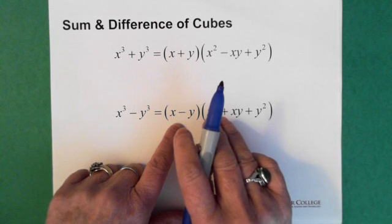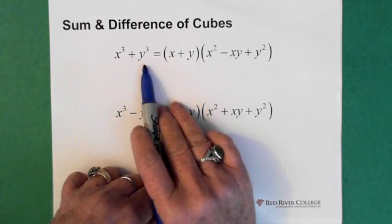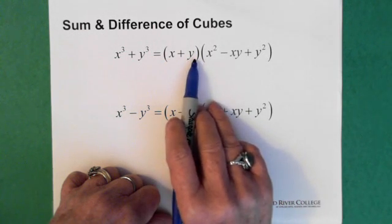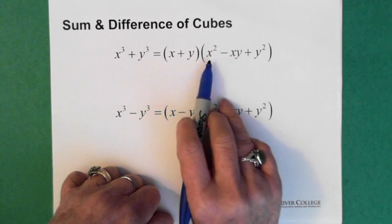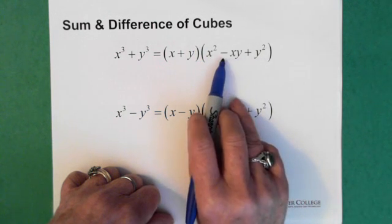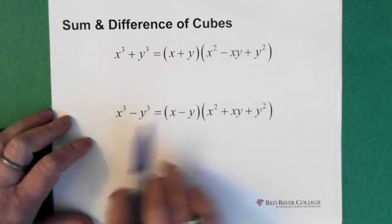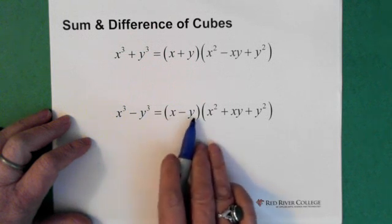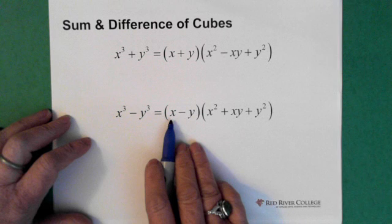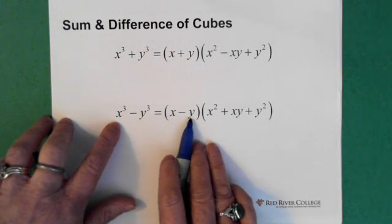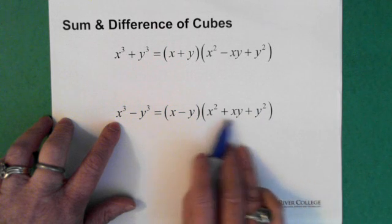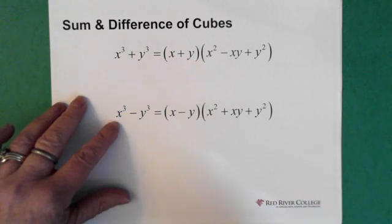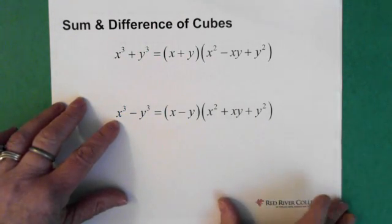So part of it is just being able to make sense of these two equations for yourself — find a way to remember. For x cubed plus y cubed, the first bracket has a positive and these are not cubed. The second bracket has three terms with a negative. For the difference of cubes, the first bracket shows the first variable minus the second, and in the second bracket they're all positive. Find a way to remember, and that's only if your instructor is not giving you the equation.